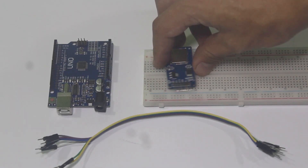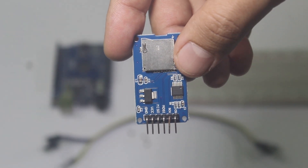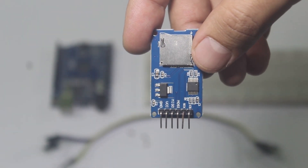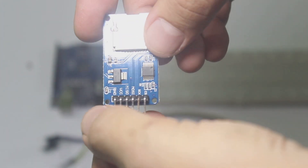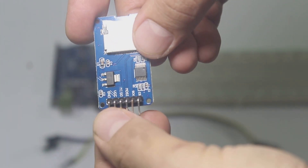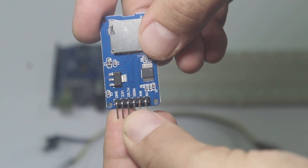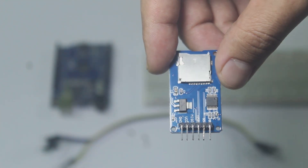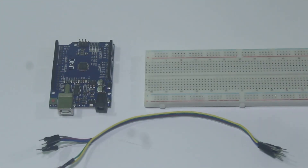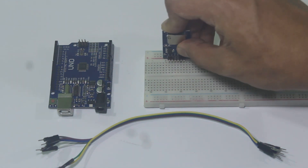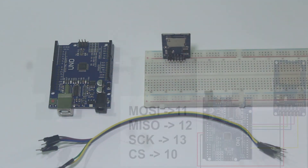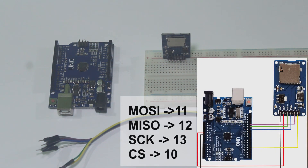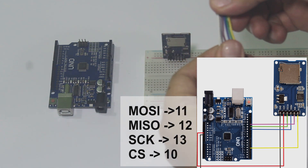This is the Arduino, the SD card module, and jumper wires. The SD card module uses SPI to communicate with Arduino, so that is MOSI, MISO, SCK, and CS — of course VCC and ground for power.